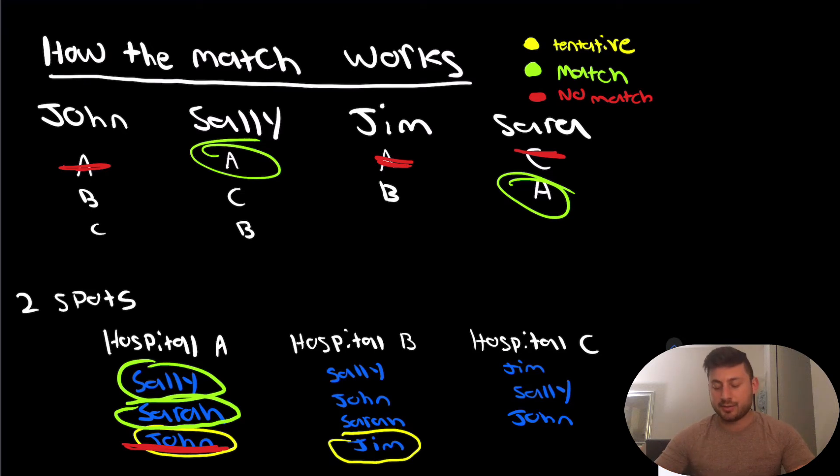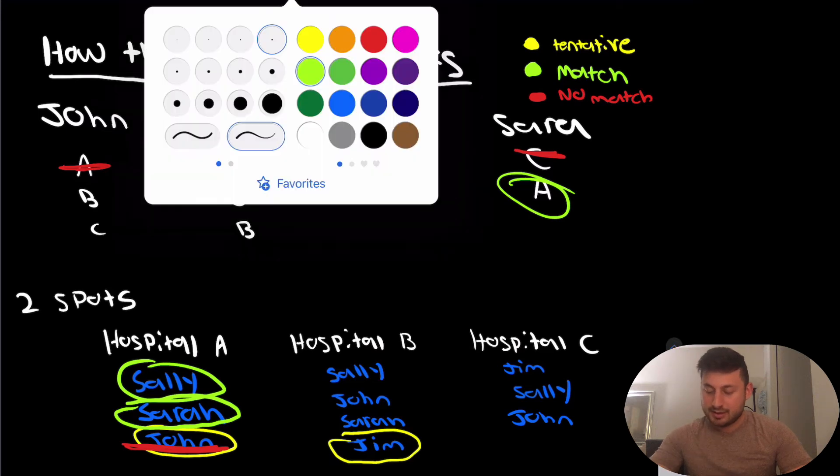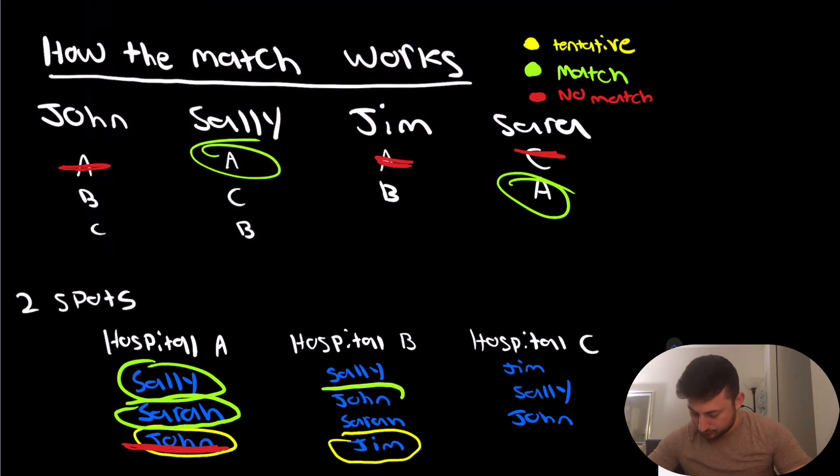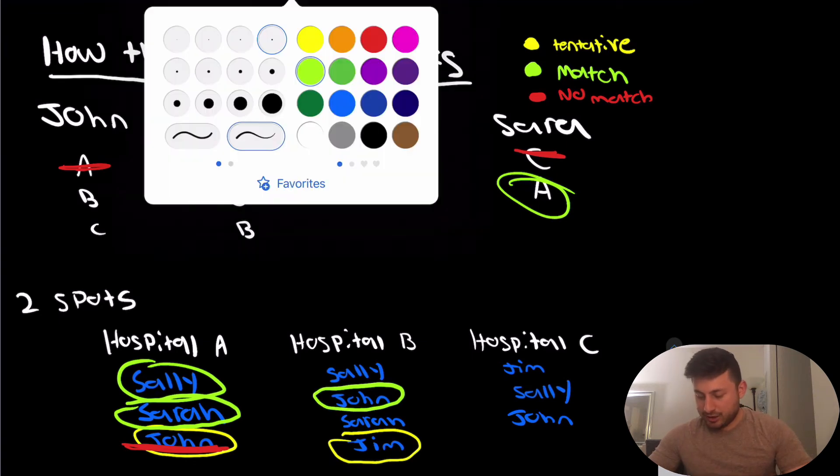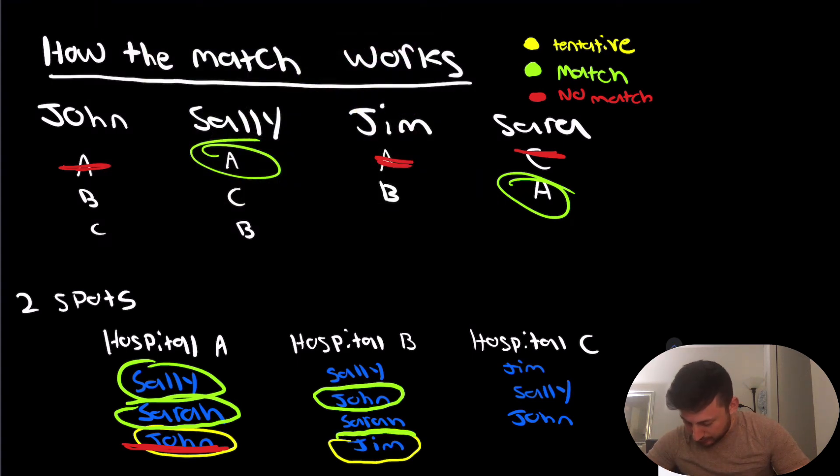So John's second rank was Hospital B, and if you see here, Hospital B has John ranked as their second slot, so that means he's in their top two, and because that's his next choice, he's definitively going to match at Hospital B. Now, because there is nobody left, it looks like Jim is going to match at Hospital B as well, and so we're going to change him to a green circle.